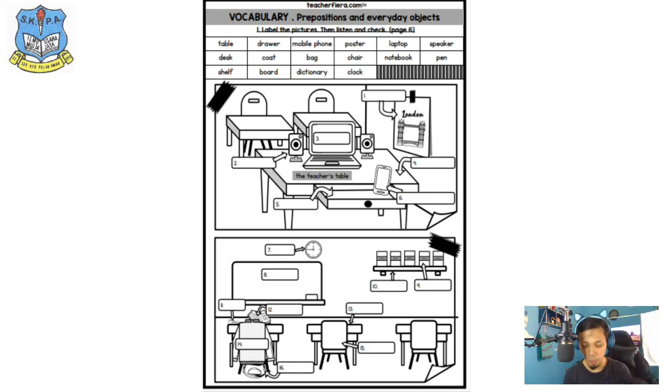Okay, for the second picture below there, at the bottom, for the bottom picture start with number seven. So number seven is the clock. Number eight, it is the picture. Yeah, number eight it is a board. Okay, board. Got that, board? Okay. Number nine is dictionary. Okay, kamu sana dictionary. Number ten, it is shelf. Okay, shelf.